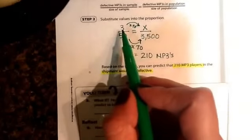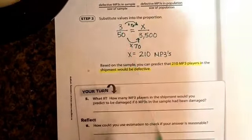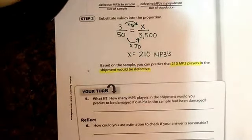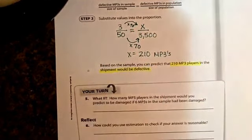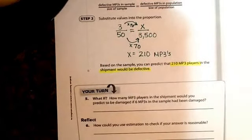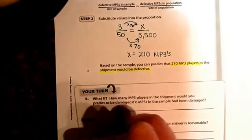Okay, well if it was 6 instead of 3 out of that same 50, if we doubled the 3 to make 6, then we would double our answer. But I want you to go ahead and show your proportion. The setup is going to be the same. If we had 6 out of 50,